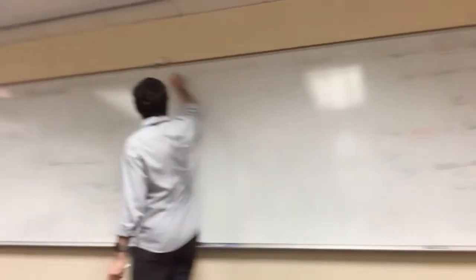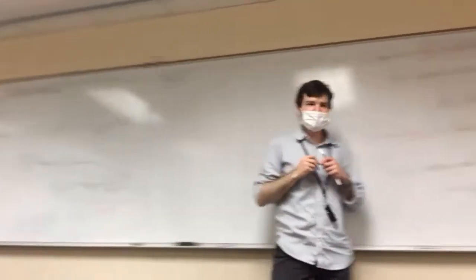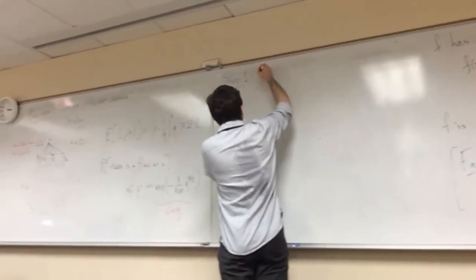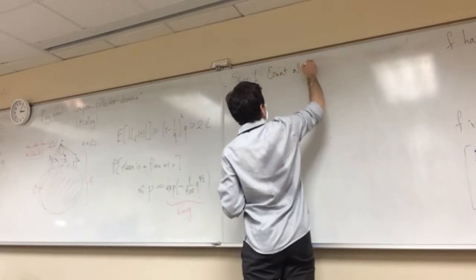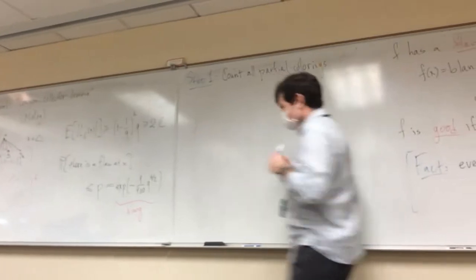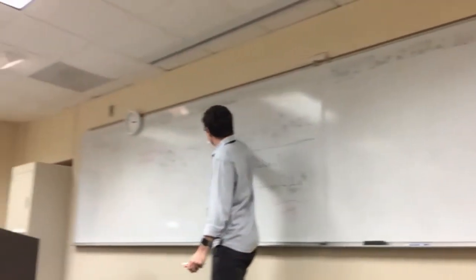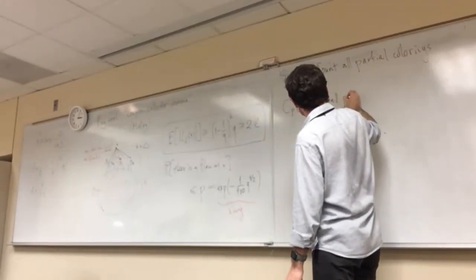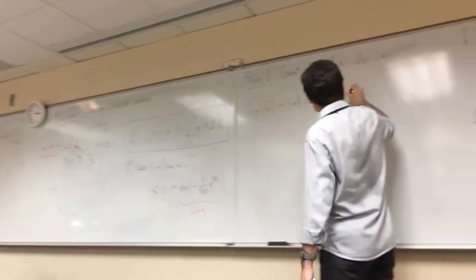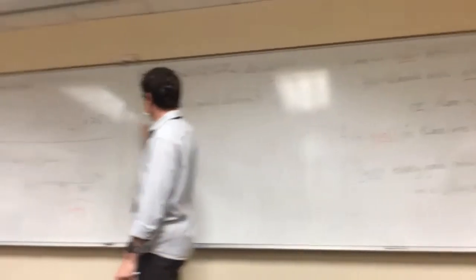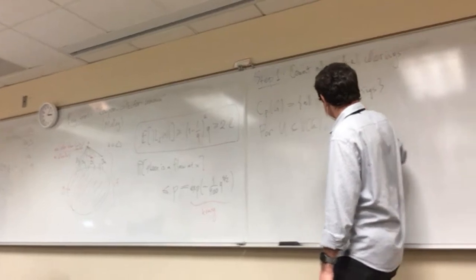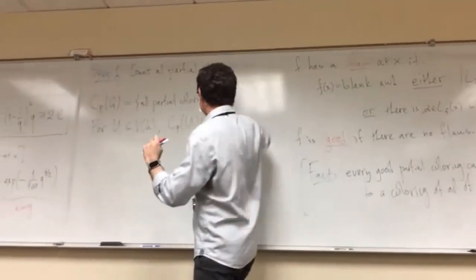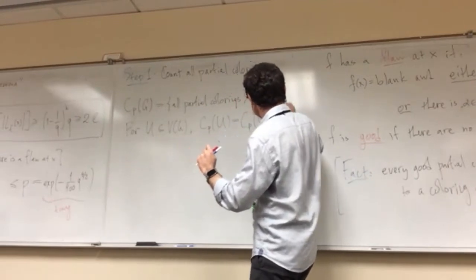So all of that was preliminaries. Now let's start the argument. Step one: we want to understand how many good partial colorings there are, so first we get a lower bound on the total number of partial colorings — good or otherwise. We introduce notation: C_p(G) is the set of all partial colorings with q colors of G, and C_p(U) for a subset U is the set of all partial colorings of the induced subgraph on U.